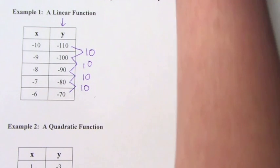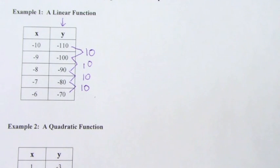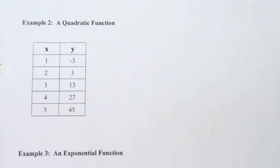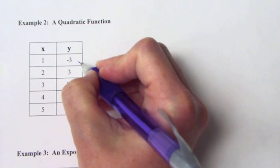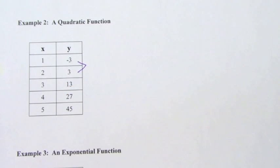So then the next one is quadratic. And I just want you to see what each of these examples look like so when you do the homework you can do this to them. Example two is a quadratic function. We already know that, and let me show you why it's a quadratic function. We're going to do the same thing as we did on example one. We're going to find the difference between negative three and positive three. What's the difference there?